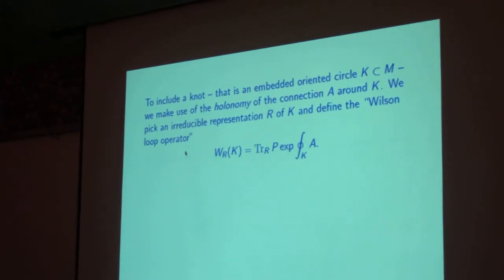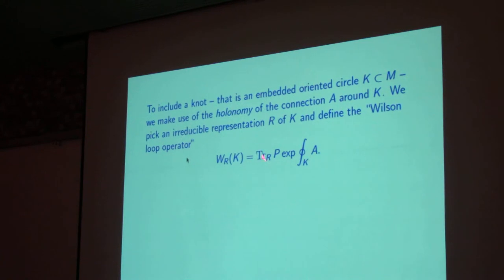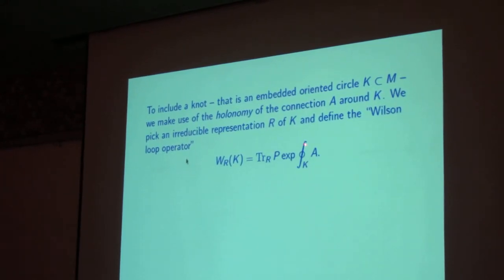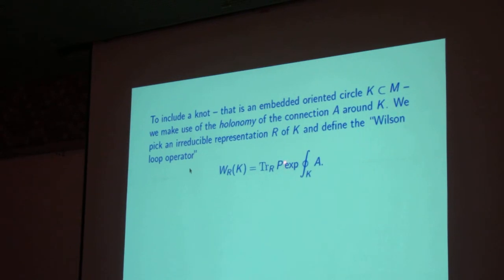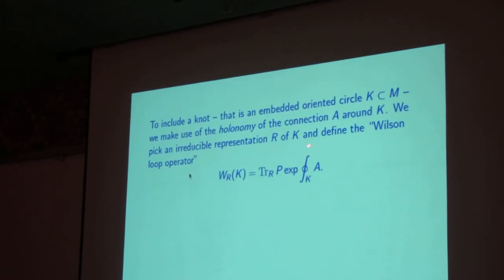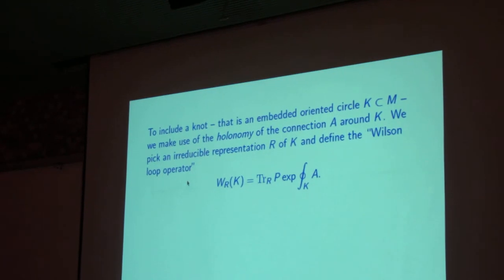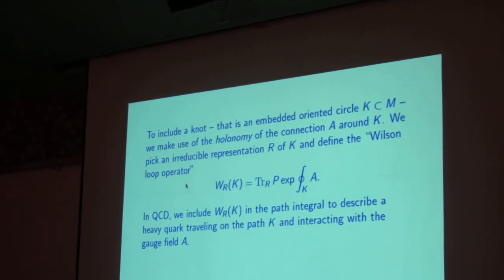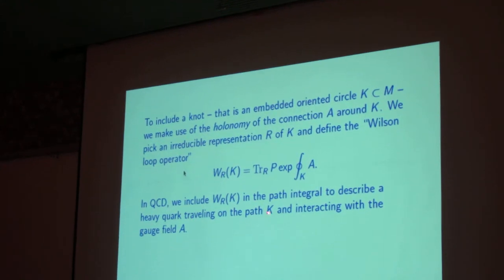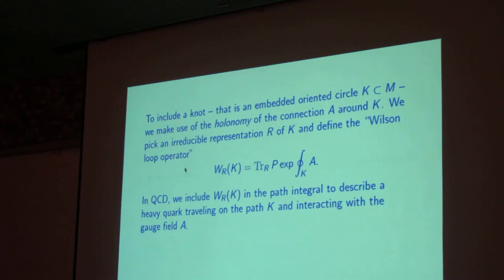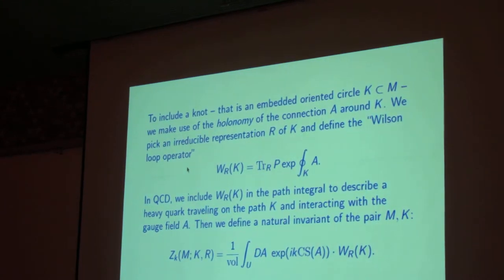If this were quantum electrodynamics, which some of you, well, electricity and magnetism which some of you will be more familiar with, there's no trace. The representation is one-dimensional. The representation is just given by an integer, the charge. So there's the integer in the exponent, and usually it would be written as e^(i Q ∫A). The electromagnetic version of this would just be the exponential of i times the integer times the electromagnetic potential integrated around the loop. But anyway, in the standard model of particle physics or in condensed matter physics, if you're considering quasiparticle impurities, you include a factor like this to describe the particle traveling on a path K and interacting with the gauge field.